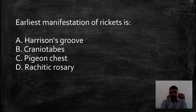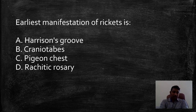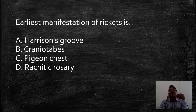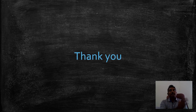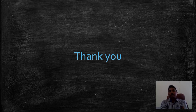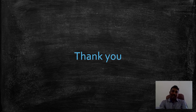The second question: What is the earliest manifestation of rickets? Options include Harrison's groove, craniotabes, pigeon chest, and rachitic rosary. The answer is obviously craniotabes — it is the earliest manifestation of rickets. Thank you very much for watching this lecture. Please subscribe to the channel, watch the lecture series, and be benefited. Thank you for patiently listening.